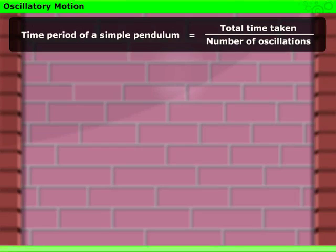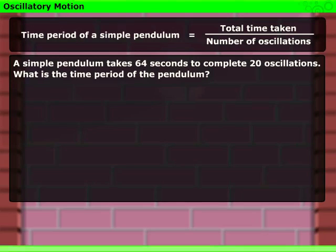With the help of this formula, we can calculate the time period of a pendulum. For example, a simple pendulum takes 64 seconds to complete 20 oscillations. What is the time period of the pendulum?